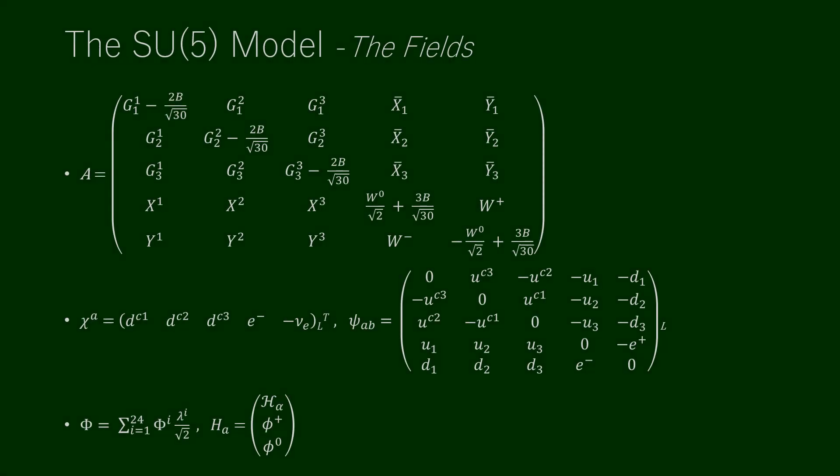SU(5) is a rank-4 group like the standard model, with fundamental 5x5 matrices. The upper-left 3x3 block corresponds to the SU(3) subgroup, while the lower-right 2x2 block corresponds to SU(2). There are 12 additional gauge bosons X and Y, which carry both SU(2) and color indices. The 24 adjoint gauge fields can be written as a 5x5 matrix, where W and B are the SU(2) cross U(1) bosons, and G are the gluon fields.